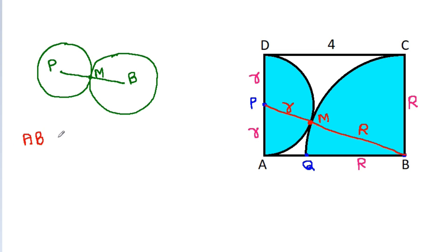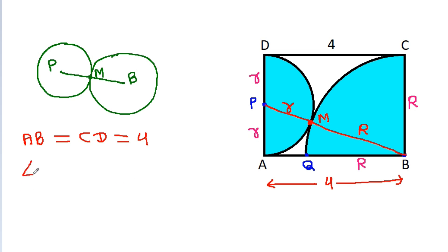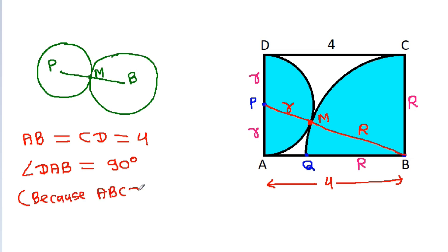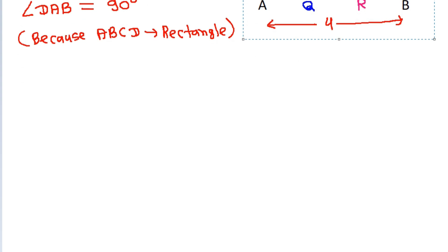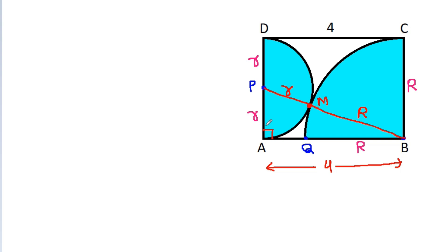Also, AB equals CD and CD is 4, so AB equals 4. Angle DAB equals 90 degrees because ABCD is a rectangle. And in triangle APB, the angle at A is 90 degrees.